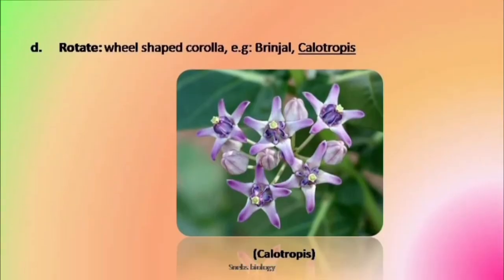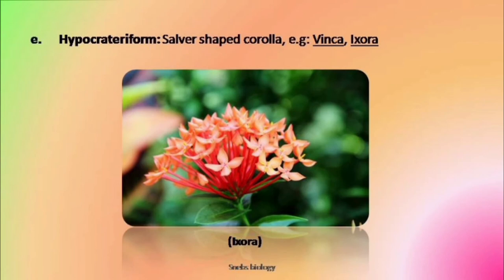One more is known as rotate — here the petals are also fused and it is a wheel-shaped corolla, seen in Calotropis, etc. Next one is hypocrateriform corolla or salver-shaped corolla. Here the corolla tube becomes narrow and it bears expanded flat limbs, which is found in Mussaenda, Ixora, Vinca, etc.